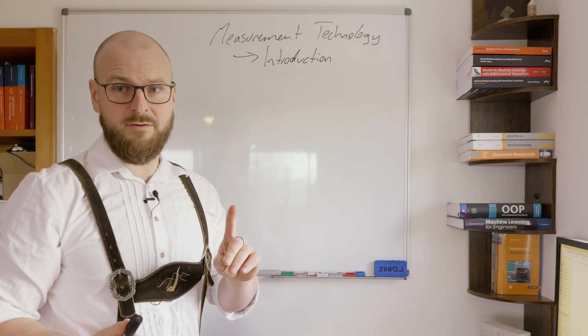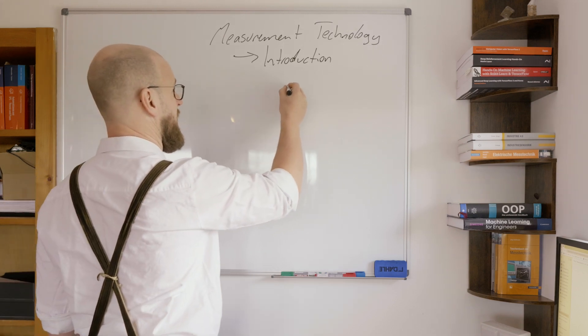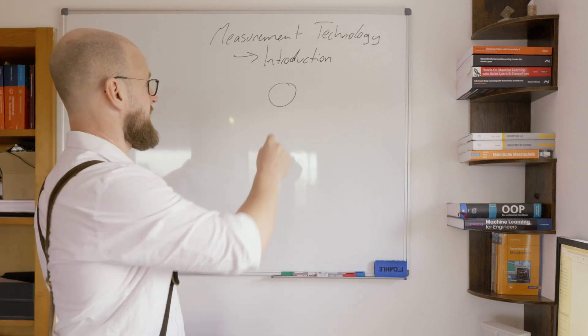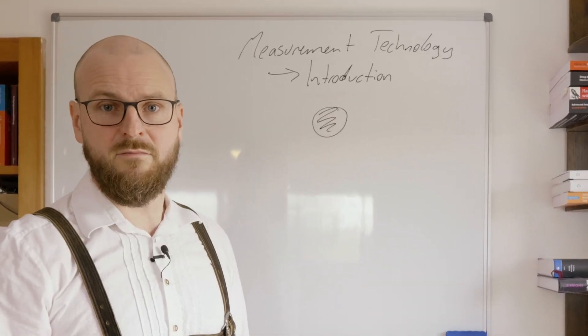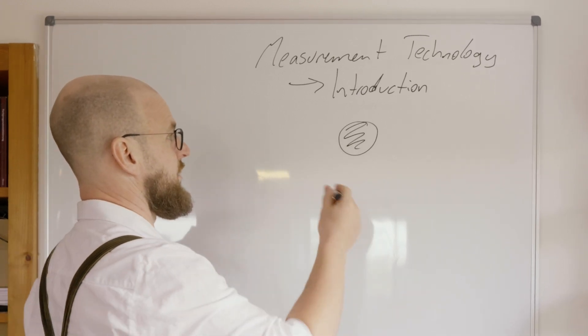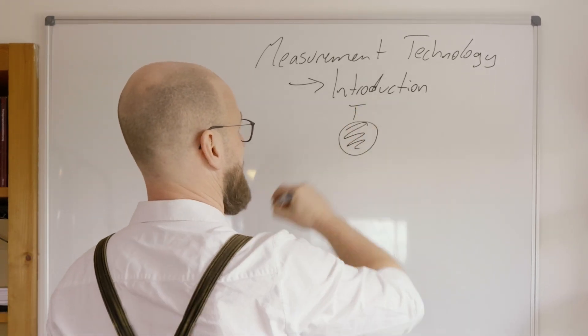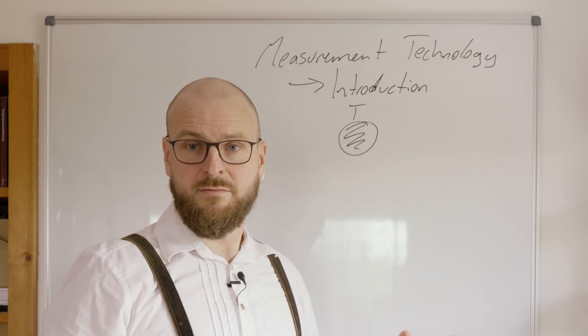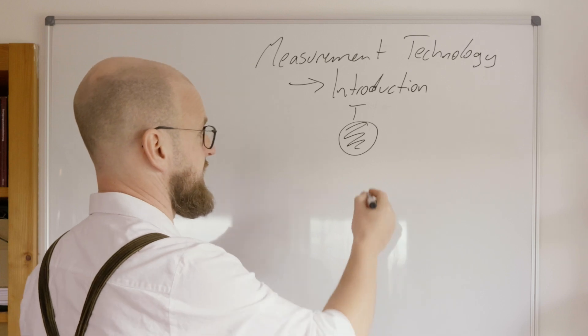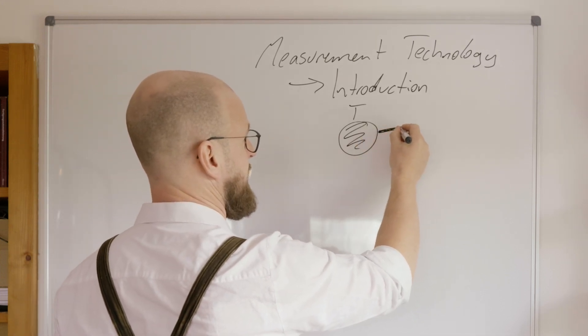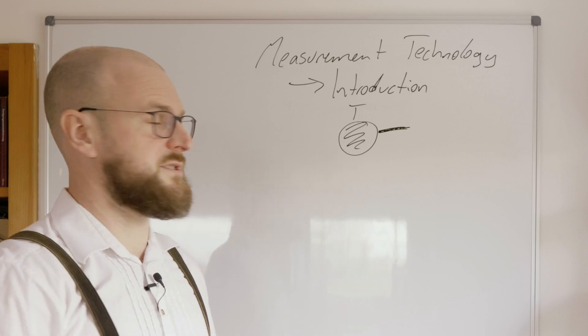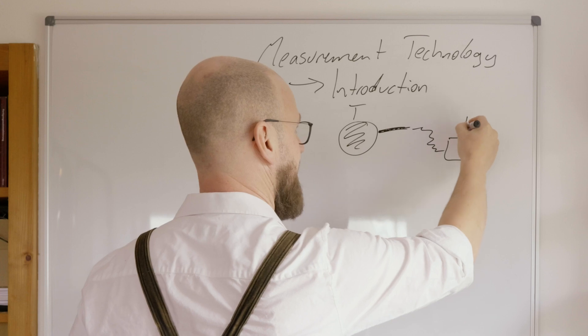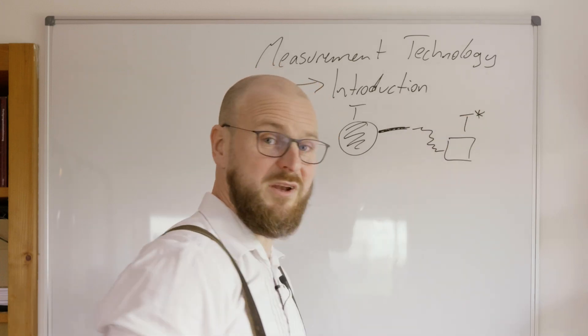The first thing which is important to know is what we want to do. Imagine that's the thing we want to know something about, for example the temperature. So we use some kind of sensor attached to the stuff, wired to some measuring unit which gives us a measurement value.